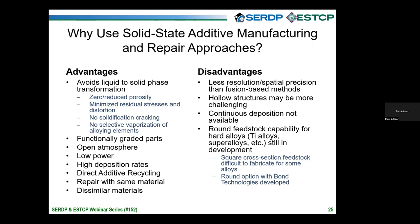There are some disadvantages. This is more of a near net shape process — you'll likely need some finish machining, making this an opportunity for a hybrid approach with other processes for higher spatial resolution. There are challenges with hollow structures, though we have made hollow structures without support material. Continuous deposition is still in development. The scientific community has expressed a desire to deposit round feedstock, and while BOND Technology has made headway transitioning from square feedstock for hard alloys like titanium and superalloys to round feedstock, it's still in development.